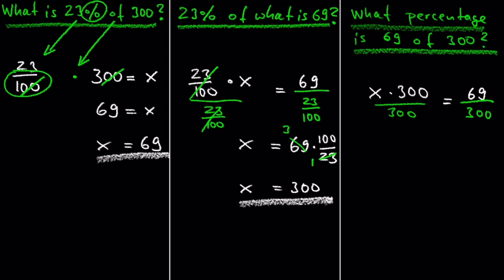And after cancelling out the 300 on the left-hand side, we get x equals 69 over 300. 69 divided by 3 is 23, and 300 divided by 3 is 100. So we get 23 over 100, which is equivalent to 23%, and we are done with this problem.